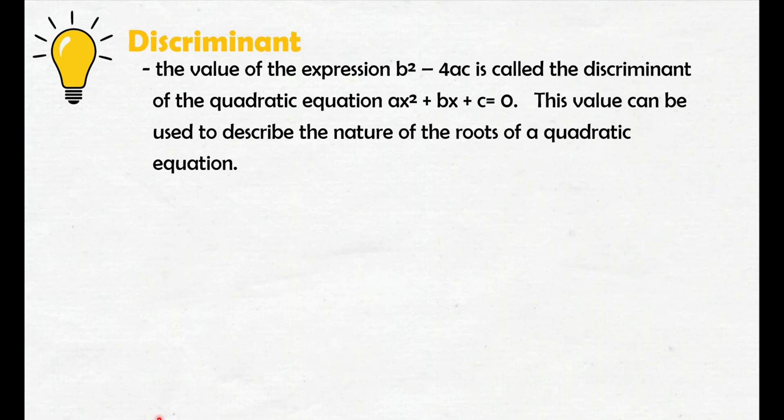Let's define first what is discriminant. The value of the expression b squared minus 4ac is called the discriminant of the quadratic equation ax squared plus bx plus c equals zero. This value can be used to describe the nature of the roots of a quadratic equation.